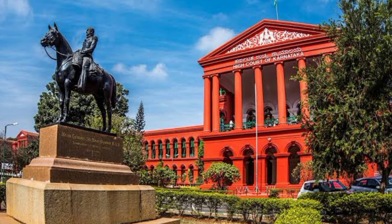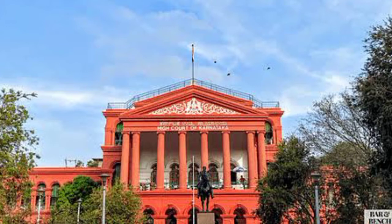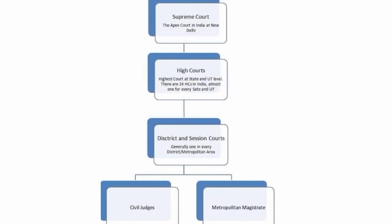An important fact: the British established three High Courts in India for the first time in Calcutta, Bombay, and Madras in the year 1862. At present there are 21 High Courts in India. There is one High Court for the states of Punjab and Haryana. Similarly, there is a High Court in Guwahati for Assam, Manipur, Meghalaya, Tripura, Nagaland, Mizoram, and Arunachal Pradesh. The Mysore High Court was established in 1884 and renamed as Karnataka High Court in 1973. Recently, two branches were established in Dharwad and Kalaburgi.